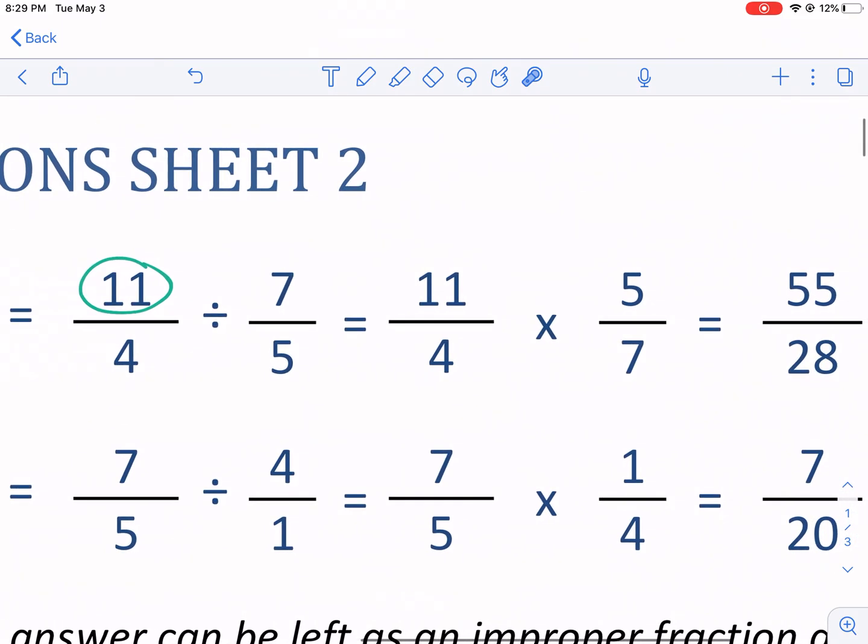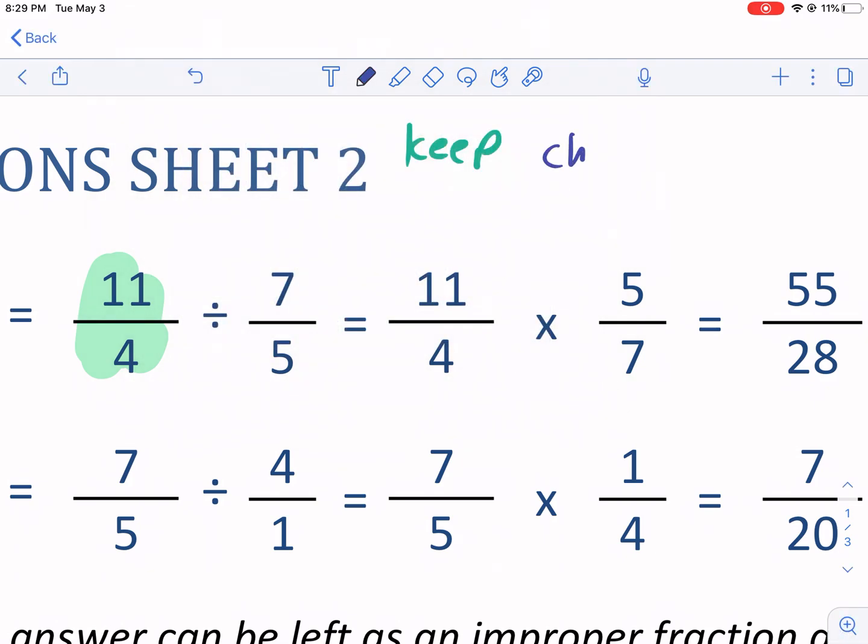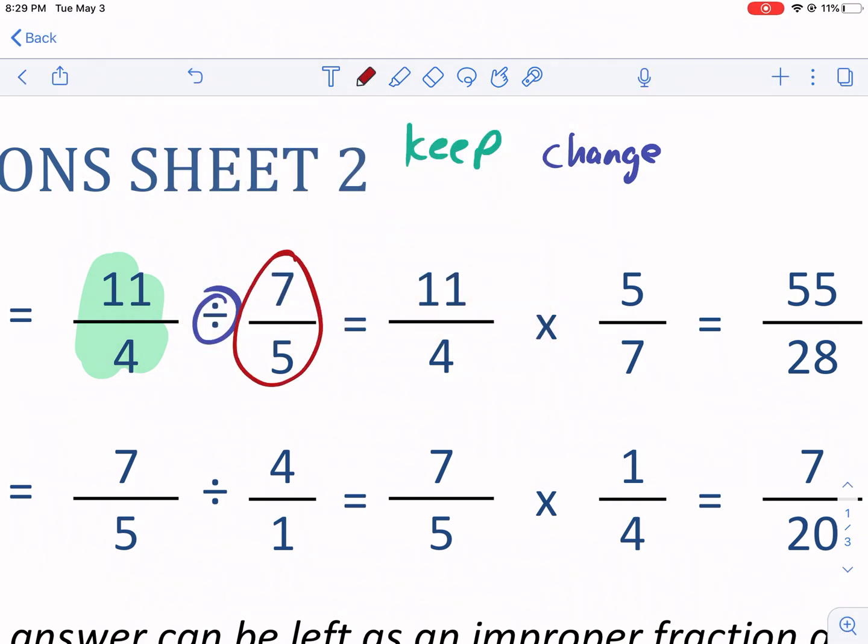And then when you get to the second part, what I like to call keep change flip. So keep change flip is keep it. You're going to keep this first fraction the same. That's the keep. We're going to change, change the division to multiplication. And we are going to flip. Flipping is simply changing the fraction into its reciprocal form.